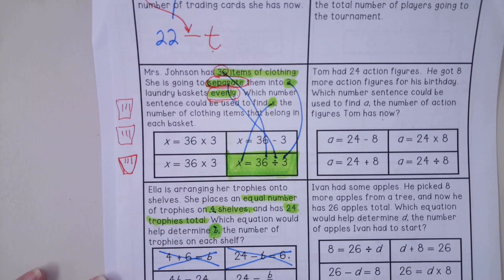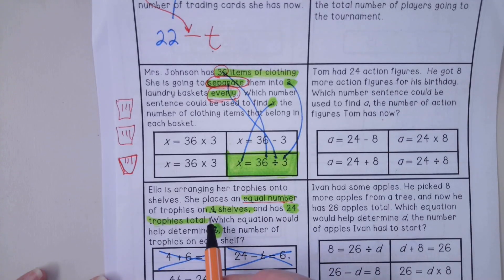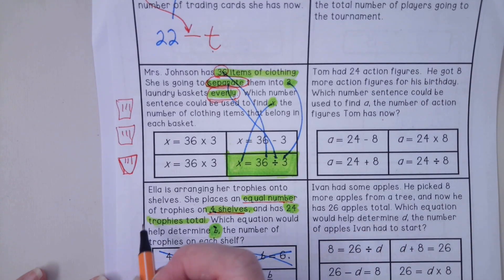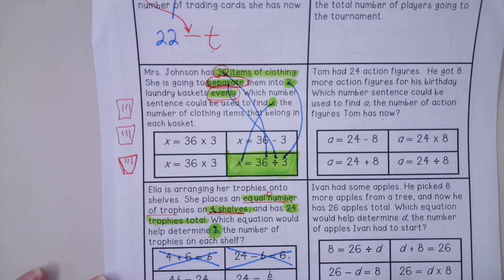Let's look again. This one, we have the four, and we have the variable b, and we have the number 24. So let's see if this makes sense. Four times b equals 24. She has an equal number of trophies on four shelves. So this equal number of trophies, that's our b. We don't know how many are going on.